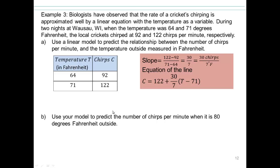All right, let's take a look then what happens. So in part B, you're asking, use your model to predict the number of chirps per minute when it's 80 degrees Fahrenheit outside. So when you have 80 degrees, so you're going to put 80 in for T, which is 9 degrees difference. So 30 over 7 times 9 plus 122. You can check for yourself approximately 161 chirps.